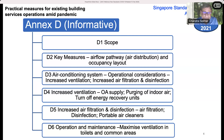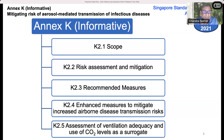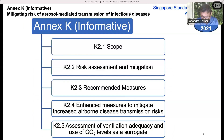The idea was: even if you can't put anything new in, make sure you can enhance ventilation in existing facilities. In SS554, the performance standard equivalent, we spoke about risk assessment and mitigation — what measures need to be put in place, enhanced measures to mitigate increased airborne transmission risk, and of course the assessment of ventilation adequacy.